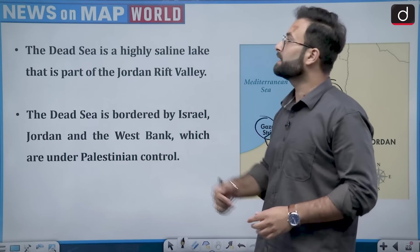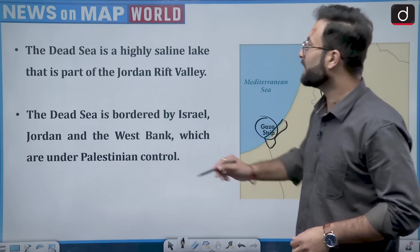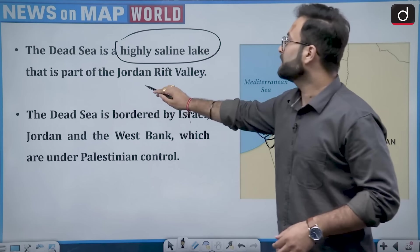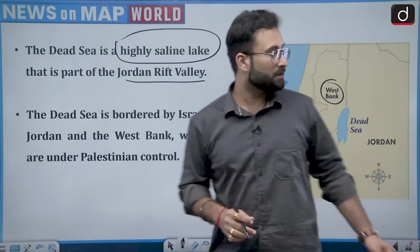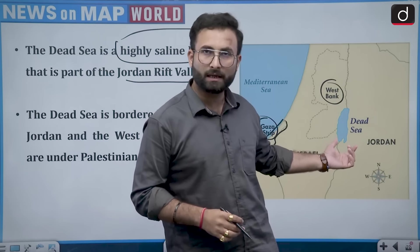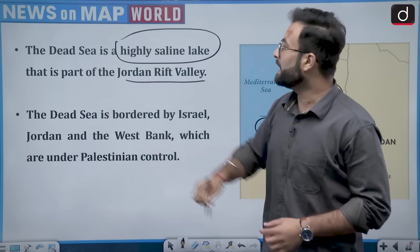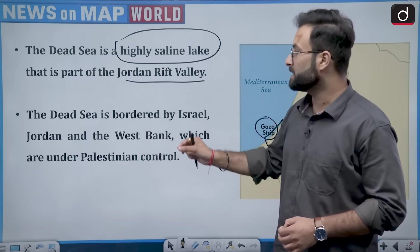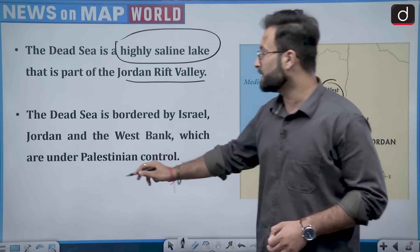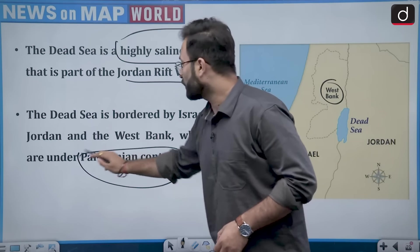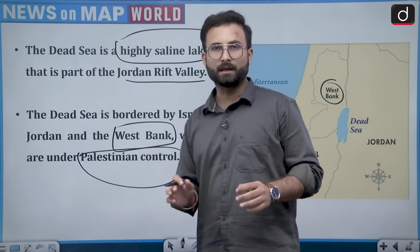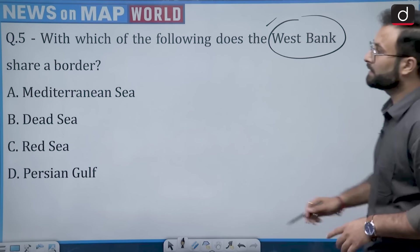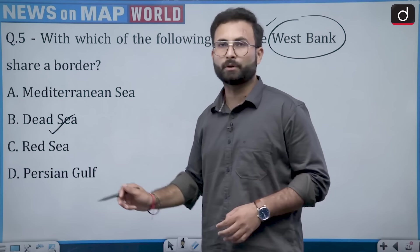The Dead Sea is a highly saline lake in part of the Jordan Rift Valley. It is bordered by Israel, Jordan, and the West Bank, which is under Palestinian control. So option B — Dead Sea — is the right answer.